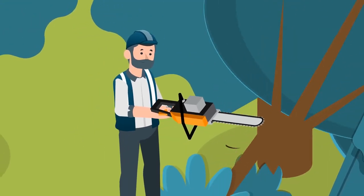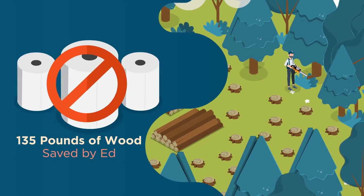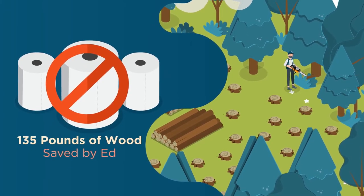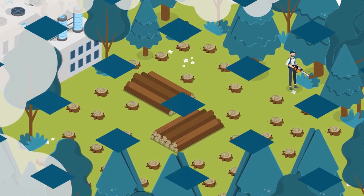Now, let's talk about the number of trees needed to wipe Ed's bum. By eliminating toilet paper, 135 pounds of wood would be saved a year by Ed. He knows that trees are important for our environment, but he has no problem using them liberally to wipe his behind.